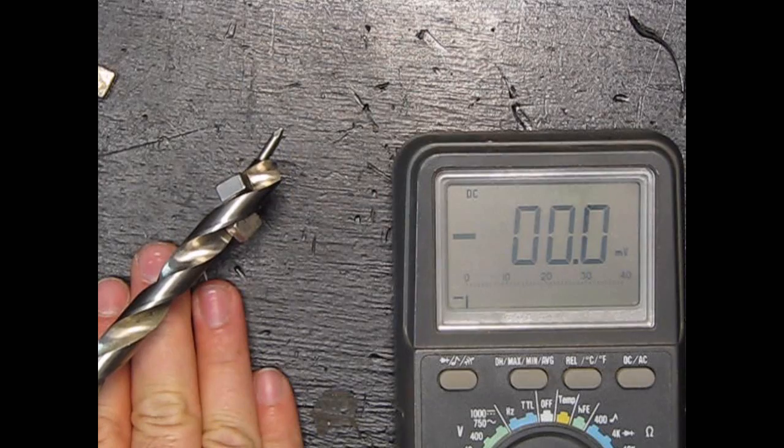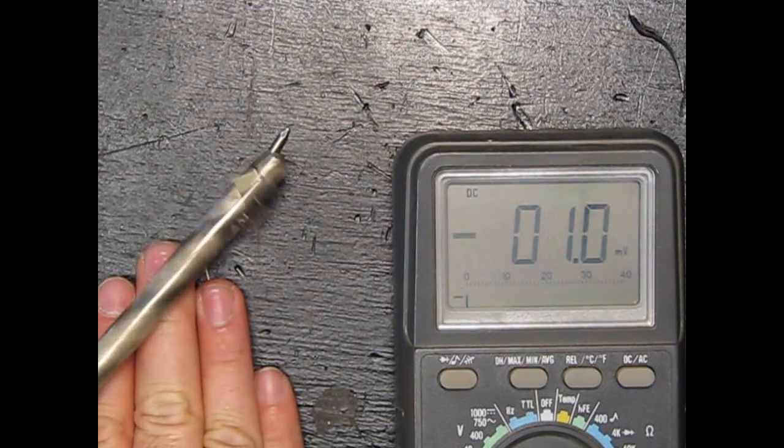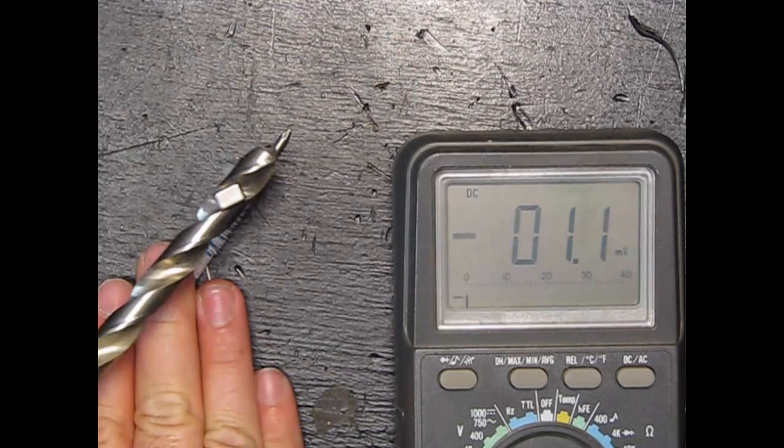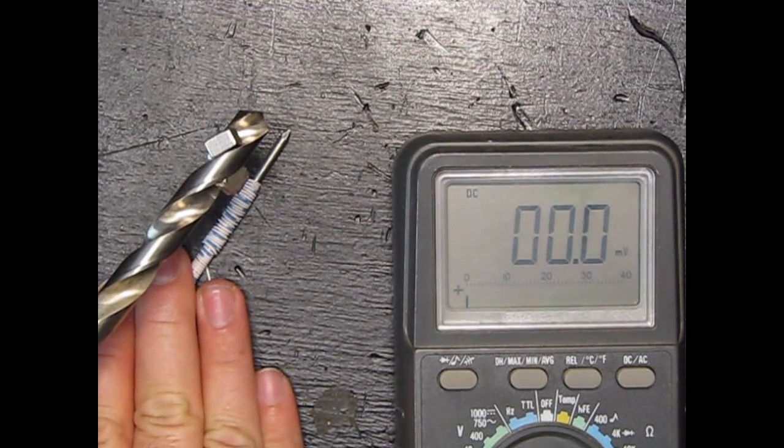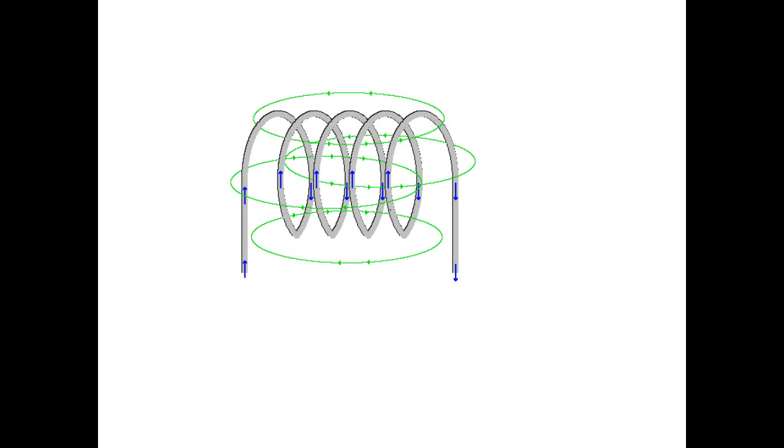Granted, this isn't much electricity, but it's proving my point. Look at that, we're creating some electricity with a magnet on the wire. So we know that if we pass a pulsing magnetic field next to a wire or a coil of wire that we can generate electricity.